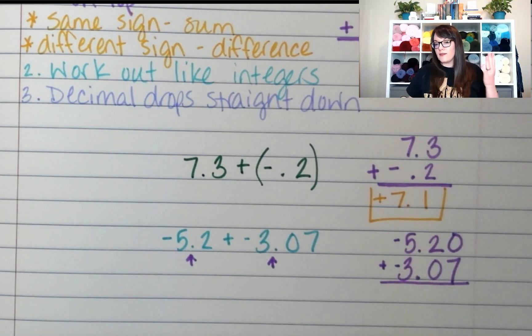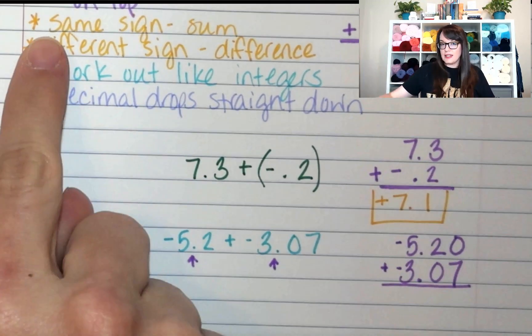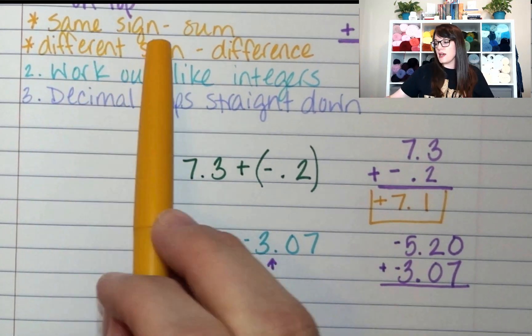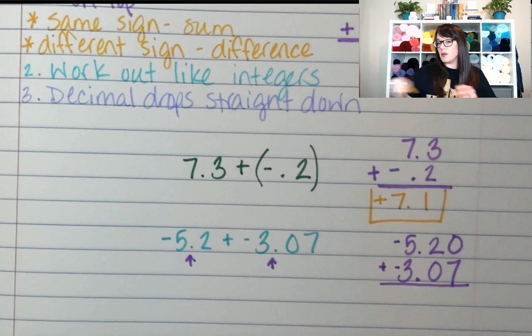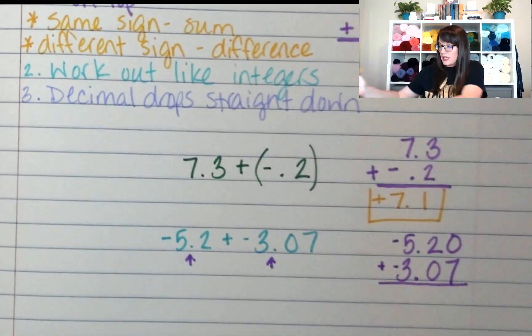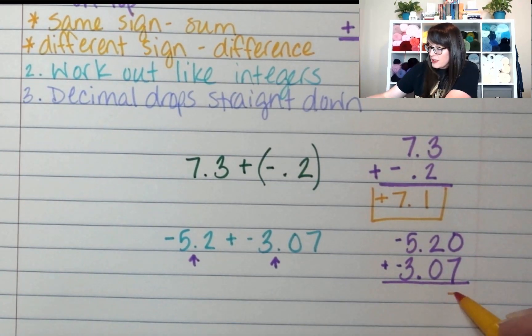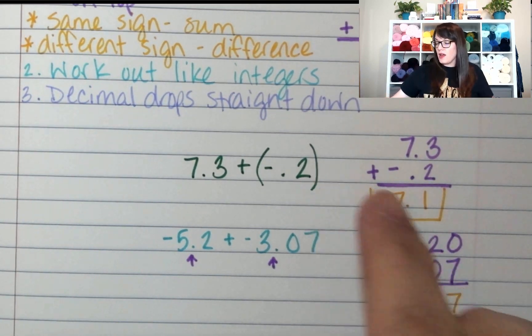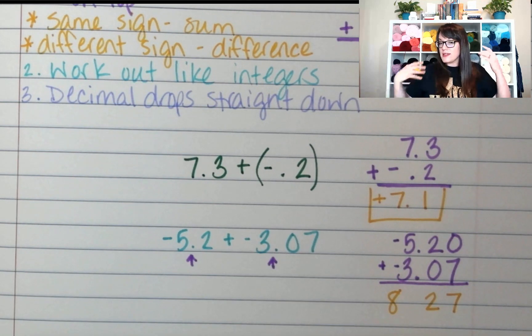Now, we have two numbers. Do they have the same sign or are they different sign? They have the same sign. So we're going to sum or we're going to add these two numbers together. So this is going to be seven, two, and eight. Now, we found the sum.